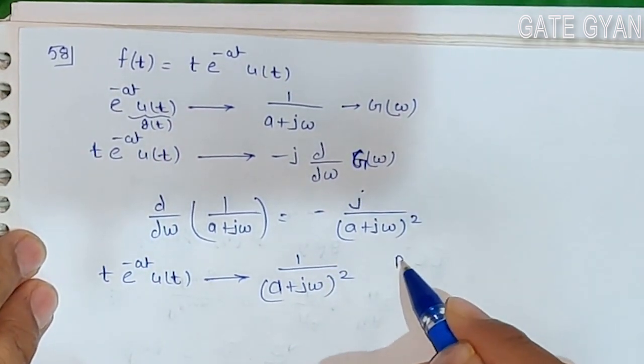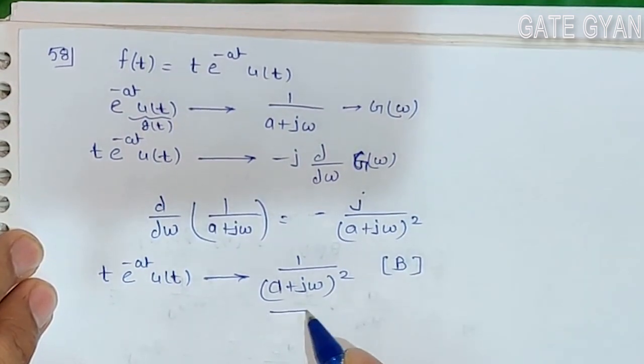the final answer is 1/(a + j2πf)², which is option (b). Thank you friends for watching.